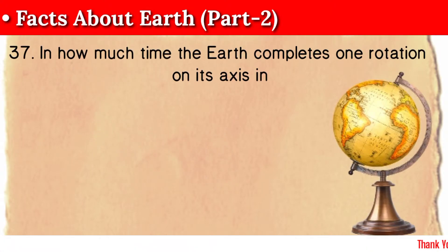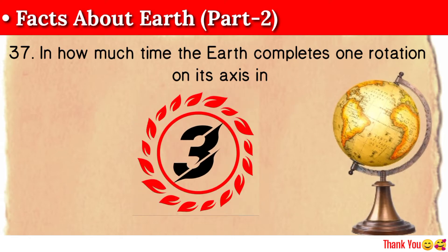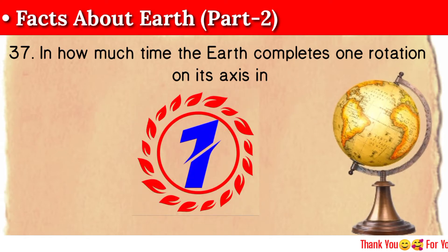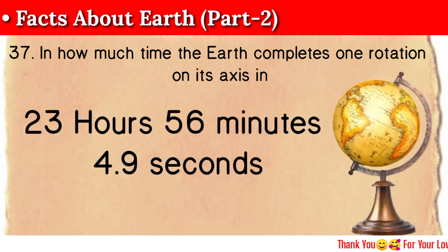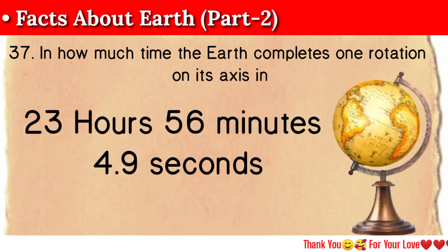Question 37: In how much time does the Earth complete one rotation on its axis? 23 hours, 56 minutes, and 4.9 seconds.